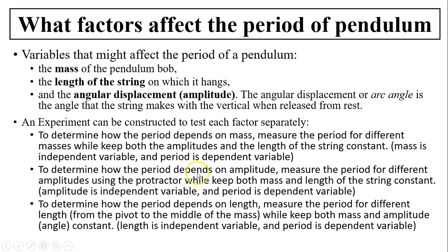To determine how the period depends on amplitude, we can do the same thing. We just measure how the period changes with a different amplitude while we have to keep the mass and length constant. So in this case, amplitude is the independent variable and the period is the dependent variable.